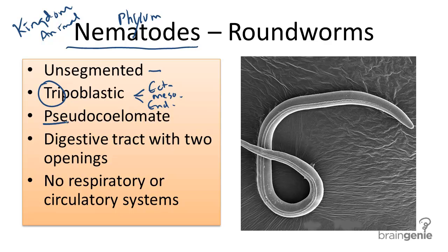They are pseudocoelomates. Pseudo meaning fake, coelom referring to a body cavity. So they have a partially lined body cavity forming in early embryonic development that can develop into more complex body systems.